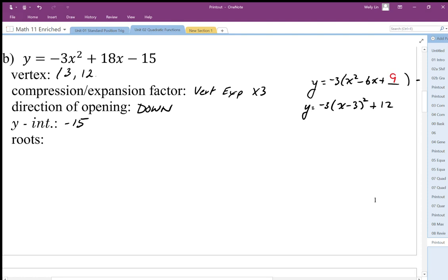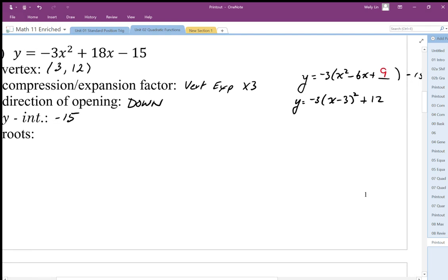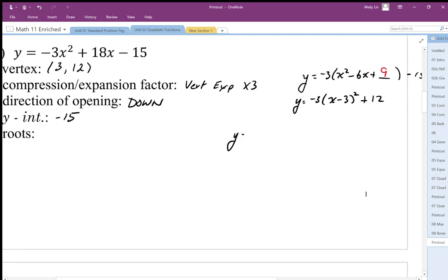Now for the roots, we need to write this in factored form. So we're going to factor the negative 3 out of the first two terms - here we're just factoring. We're going to use all three terms, so we're going to factor this to x² - 6x + 5. We're looking for two numbers that multiply to 5 and add to -6.